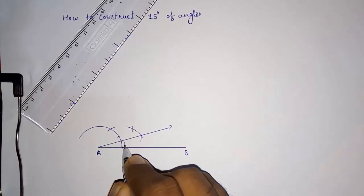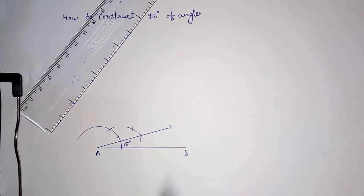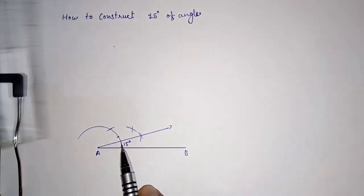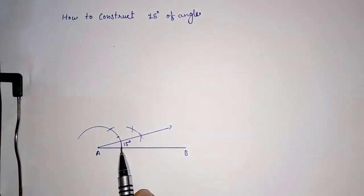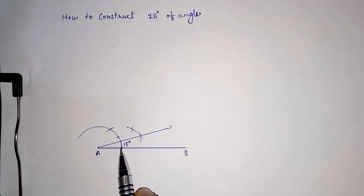Again, I'm explaining: this is your zero, and with the same measurement we cut an arc—this was 60 degrees. Between zero and 60 comes 30 degrees, and between zero and 30, the bisector is 15 degrees. So this angle is 15 degrees.